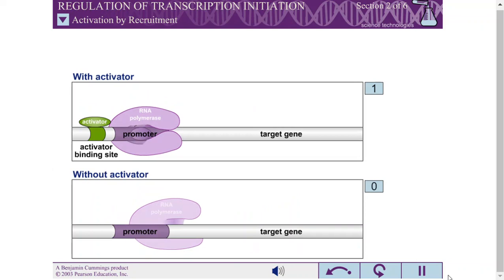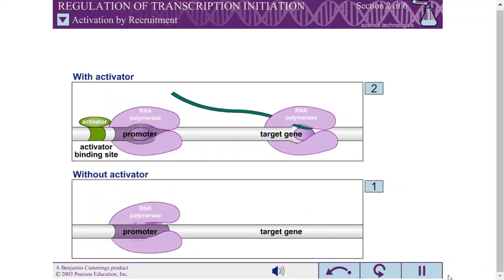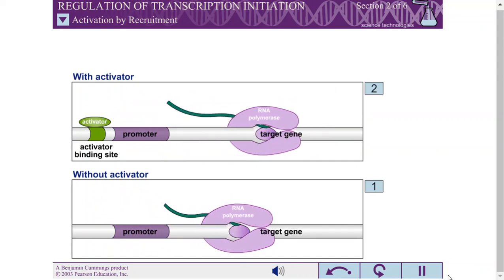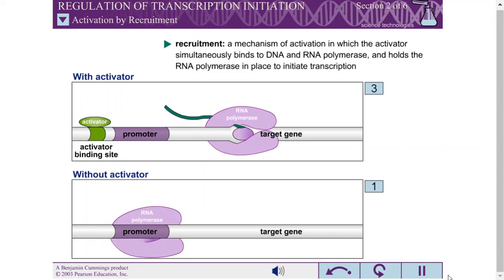Typically, activators increase RNA expression by binding to the DNA and RNA polymerase simultaneously and holding RNA polymerase in place long enough to initiate transcription. This mechanism of activation is called recruitment.